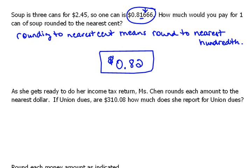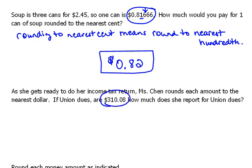As she gets ready to do her income tax return, Mrs. Chen rounds each amount to the nearest dollar, because that's the way income taxes are really done. We don't deal with the cents — we always round to the nearest dollar. If union dues are $310.08, how much does she report for union dues? We're going to take this number and round it to the nearest dollar.